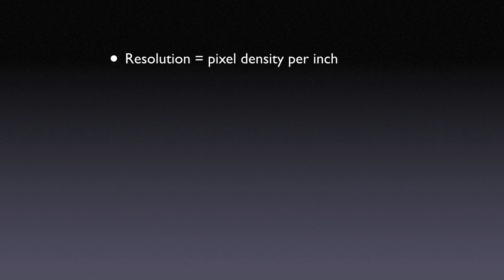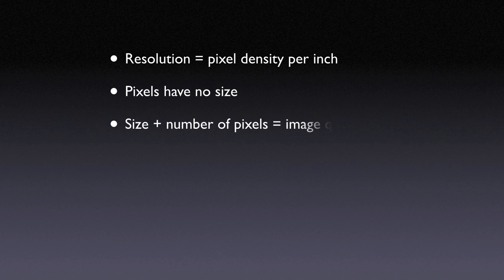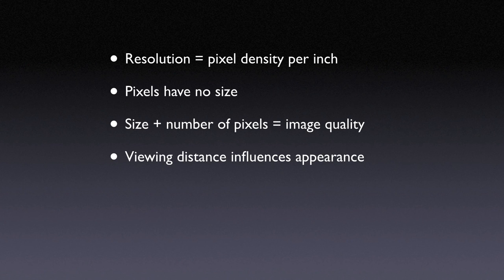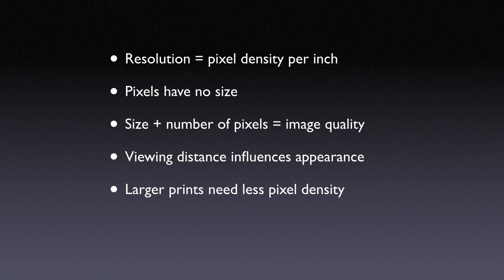Quick review: Resolution is the density of pixels per unit of measure, given in the US as pixels per inch. Pixels — those square units of color — have no inherent size, and the collection of pixels that makes up an image can be output a number of different ways at different sizes. The size and number of pixels in an image determines the quality of detail. Viewing distance also influences the appearance of detail, so larger prints need less resolution. Computer screens are considered fine at 72 pixels per inch, even though the typical LCD monitor has a resolution of 90 pixels per inch or more.